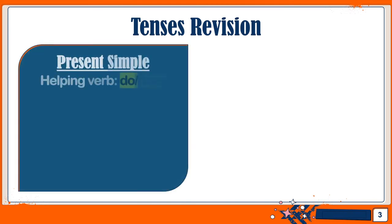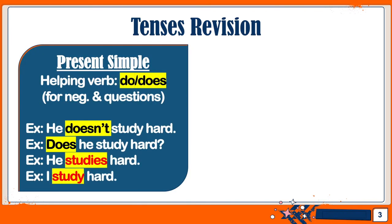First, let's take a look at the present simple. The helping verb for the present simple is 'do' or 'does.' Remember that 'does' is for the third person singular — that is he, she, or it. We only use the helping verb for negative sentences or questions, like in these examples: 'He doesn't study hard' or 'Does he study hard?'